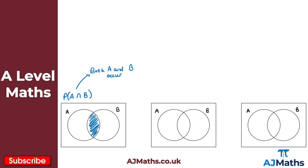Now if we take a look at the union, represented on the middle Venn diagram — the probability of A union B. We use this symbol that looks almost like a U, and this represents the union. This is when we have A, B, or A and B.